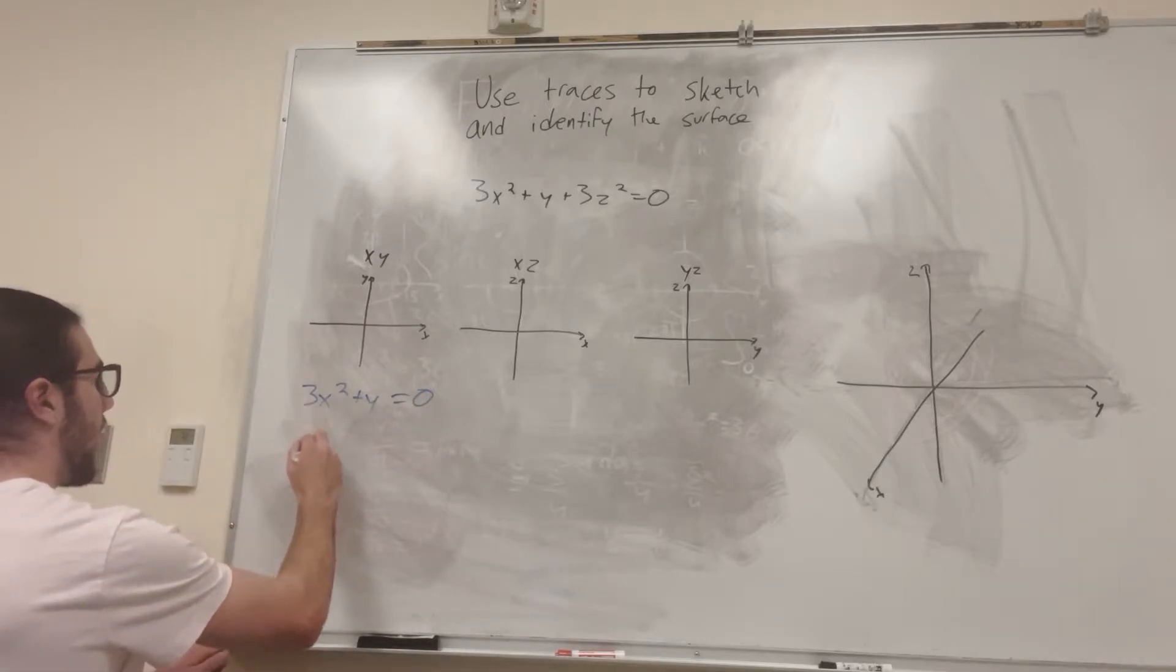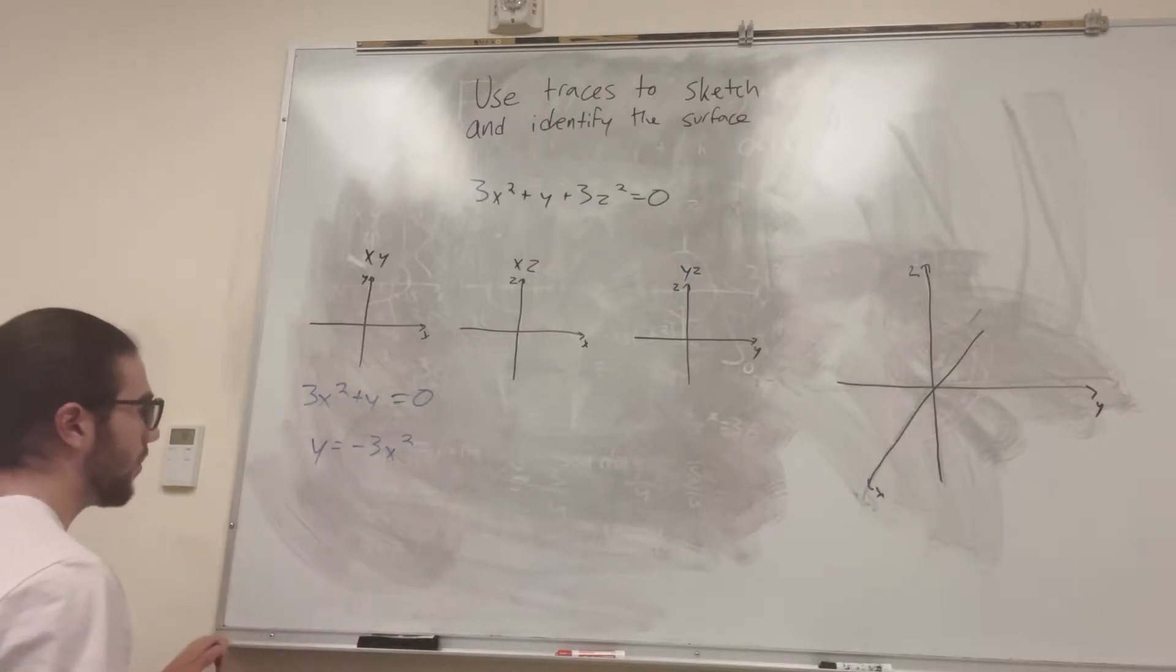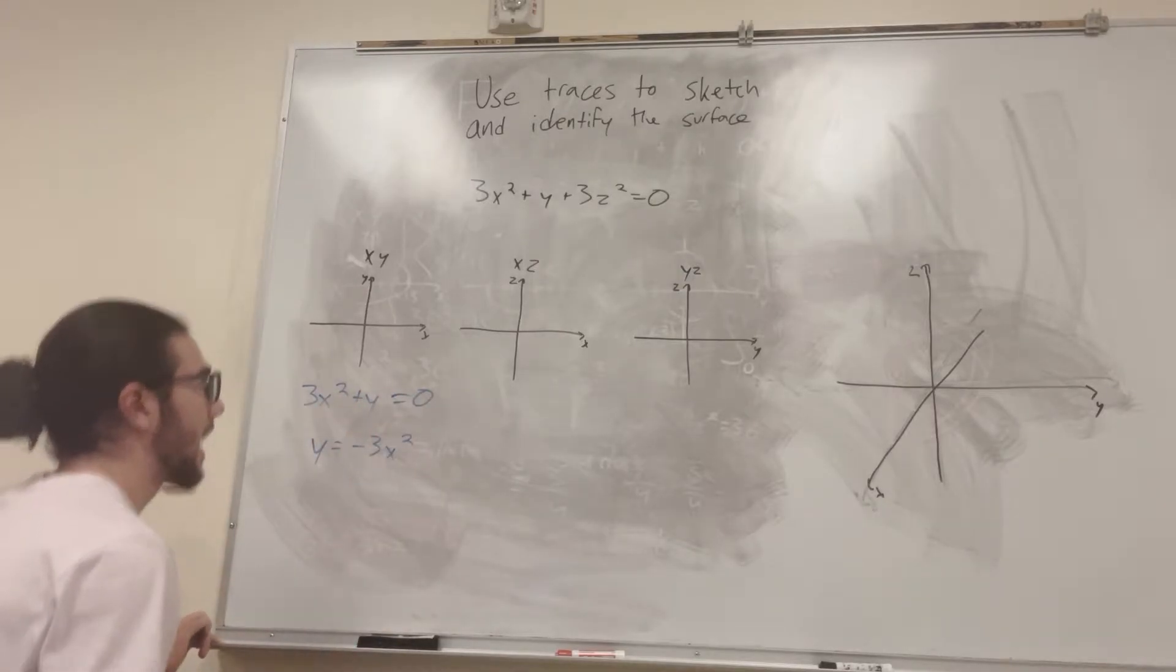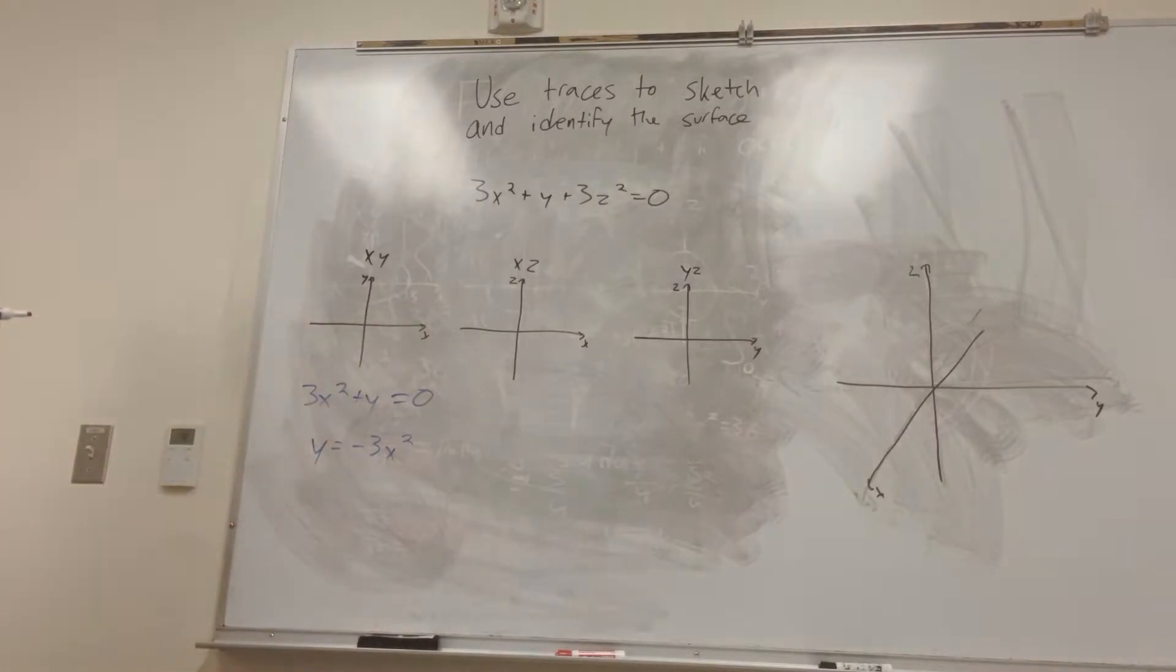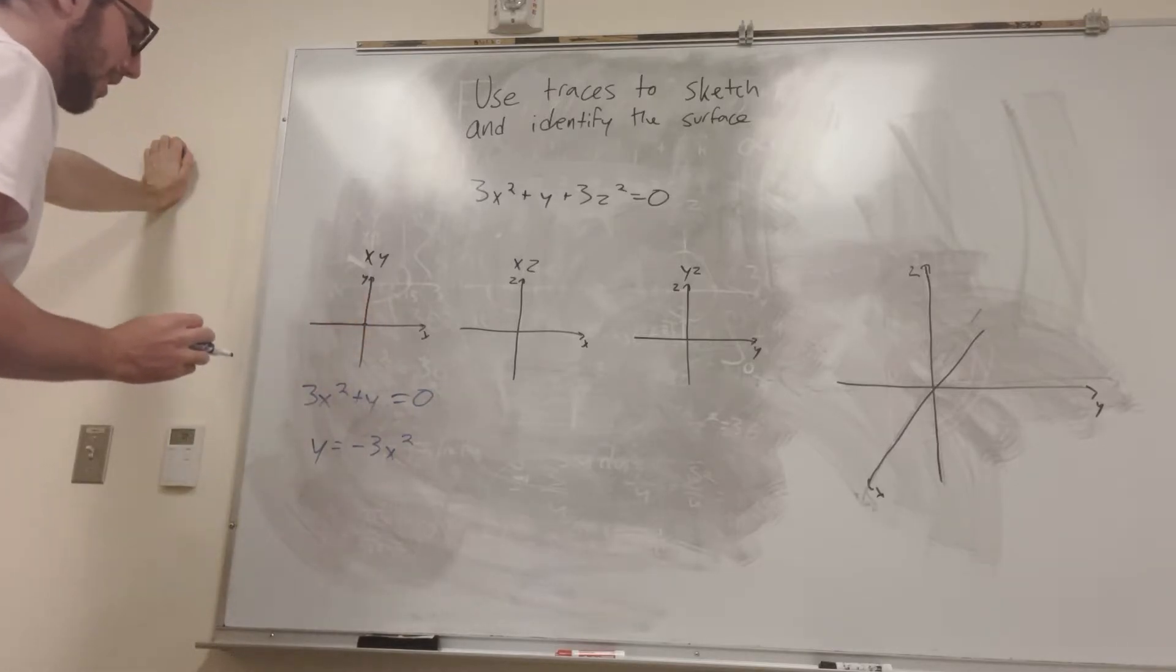Alright, now what we can do is we can just say y is equal to negative 3x squared. Subtract that from the side, and then we have an equation that we know how to draw from algebra, basically. So y is equal to negative 3x squared, right? So we know that both is going to start at zero, and this is a parabola, right?